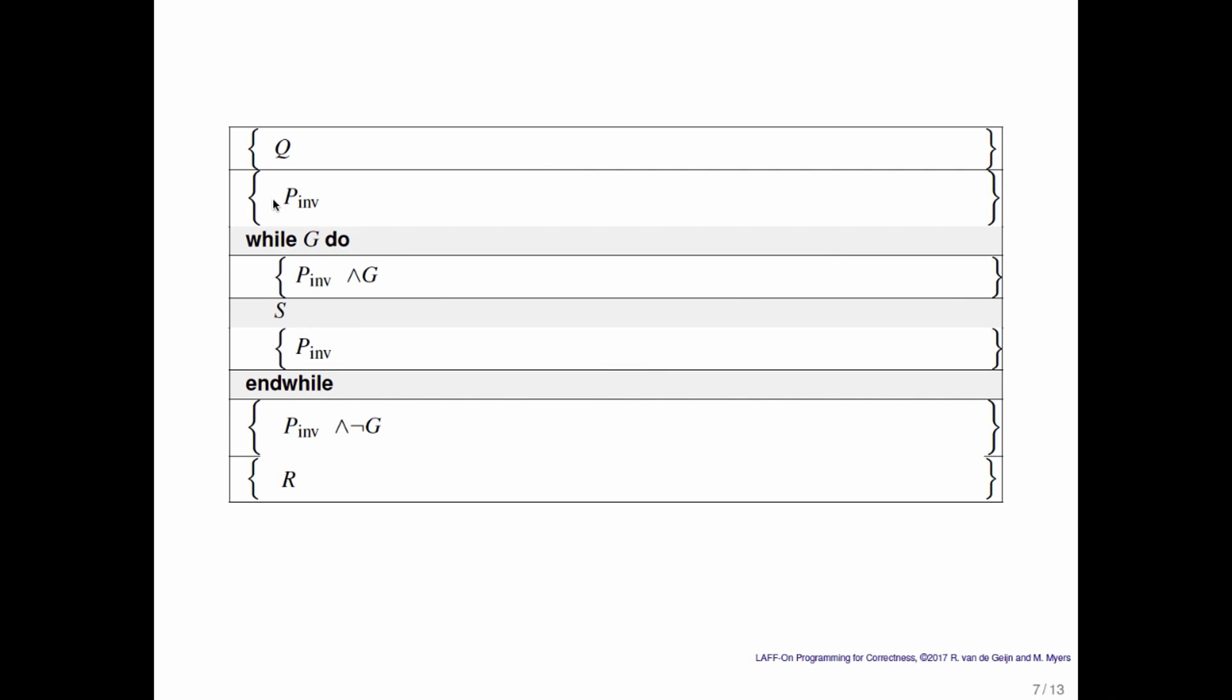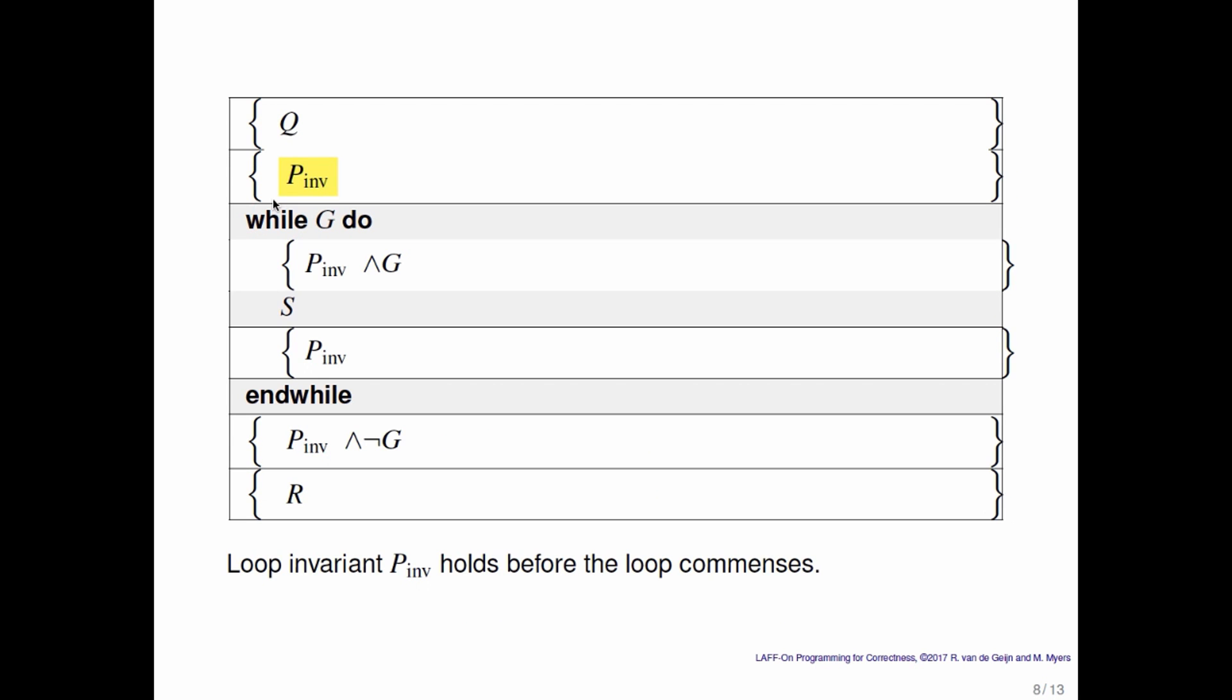Here we've taken away the specifics of this example. So what do we have here? We have the precondition q and the postcondition r. We would like to show that this loop takes us from a state in which q holds to a state where r holds.